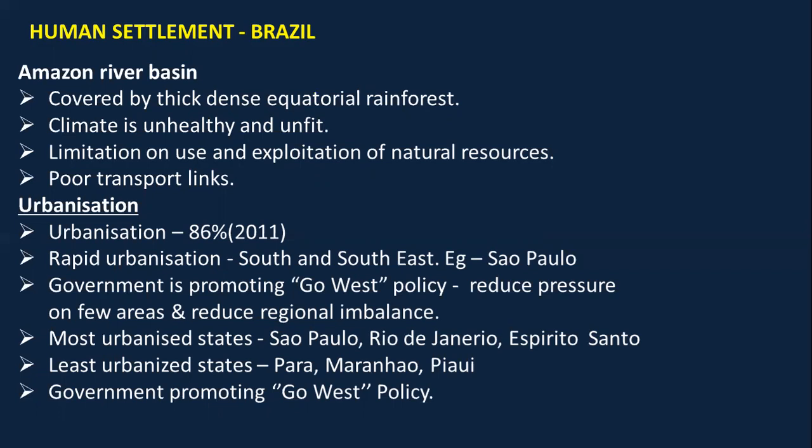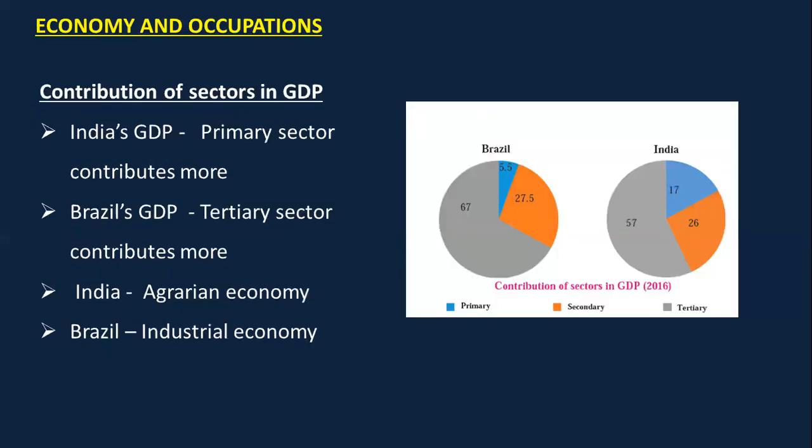Urbanization of Brazil is 86%. Rapid urbanization is found in the south and southeast region of Brazil. The government has been promoting the 'Go West' policy because Brazil's entire population is concentrated in the south and southeast, leading to regional imbalance. By promoting Go West, they aim to reduce this imbalance.